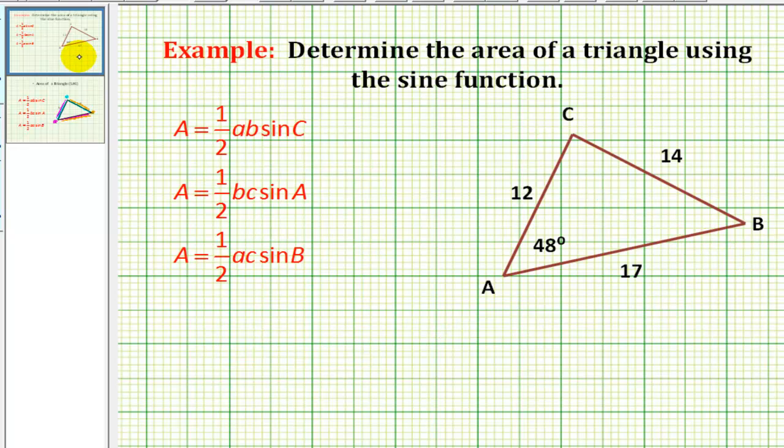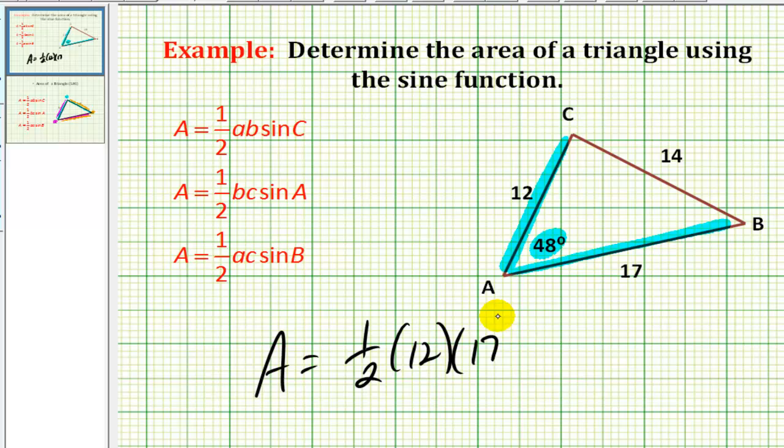Looking at our example now, if we want to determine the area of this triangle, and we're going to use this angle here, then we must use the length of this side and the length of this side in our formula. You shouldn't have to memorize all three of these formulas. Just be aware of the relationship between the two sides and the angle used in the formula. So for this example, we have the area is equal to 1/2 times 12 times 17 times sine 48 degrees.